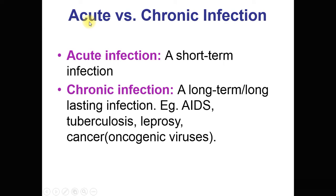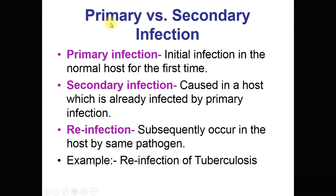Acute and chronic infection: acute infection lasts a short time — the pathogen enters the host body, produces the infection, and the host recovers. Chronic infection is a long-lasting infection that can last up to years. Examples include AIDS, tuberculosis, leprosy, and cancer due to oncogenic viruses.